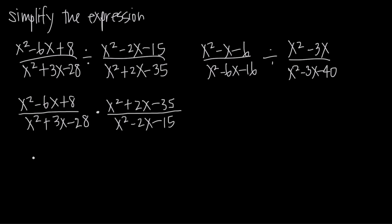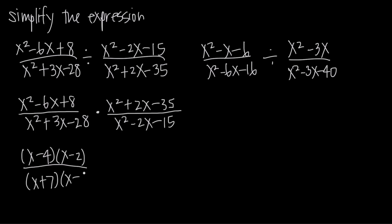If we try to factor x squared minus 6x plus 8, we get (x minus 4)(x minus 2), because negative 4 times negative 2 gives positive 8, and negative 4 plus negative 2 gives negative 6, which is what we need in the middle. Looking at the denominator, x squared plus 3x minus 28 factors as (x plus 7)(x minus 4), since positive 7 times negative 4 gives negative 28, and positive 7 plus negative 4 gives positive 3.